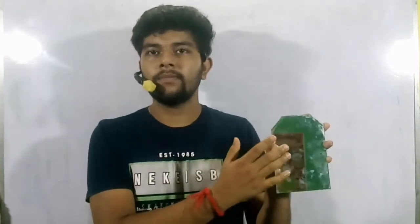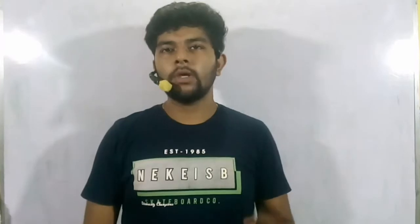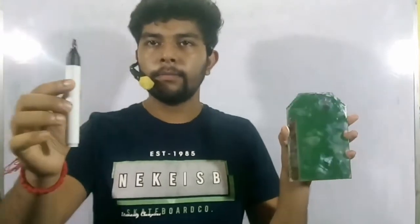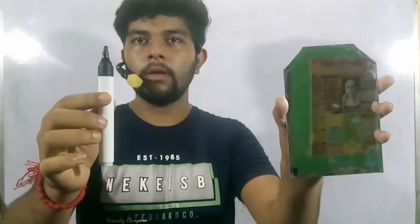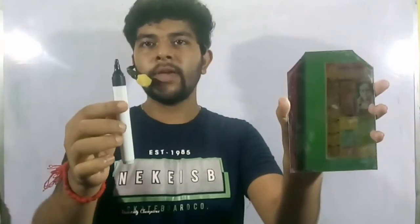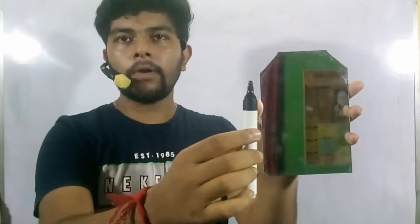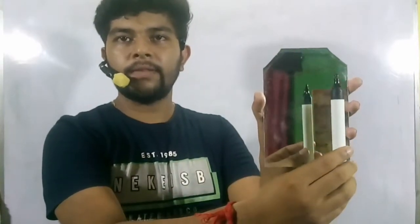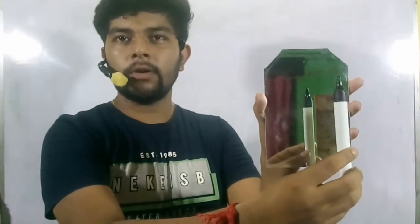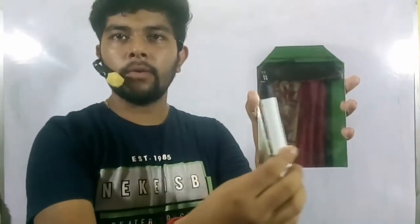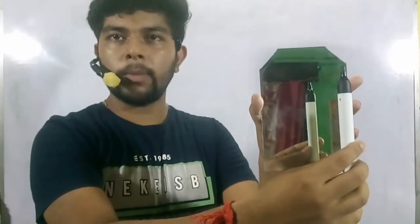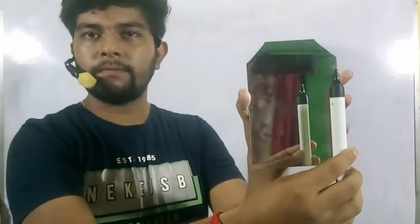We are going to study what are the characteristics of the image formed by this plane mirror. In my left hand you can see this is a plane mirror, and in my right hand this is a marker pen. Now if I bring this marker pen in front of a plane mirror, you can find the image is formed behind the mirror.